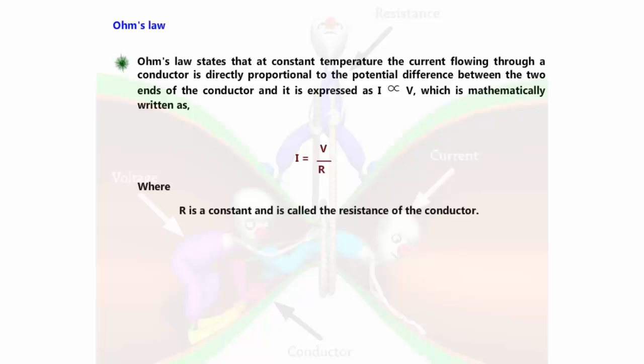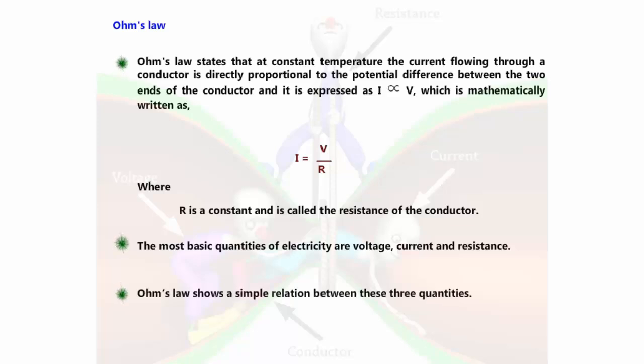Where R is a constant and is called the resistance of the conductor. The most basic quantities of electricity are voltage, current, and resistance. Ohm's law shows a simple relation between these three quantities.